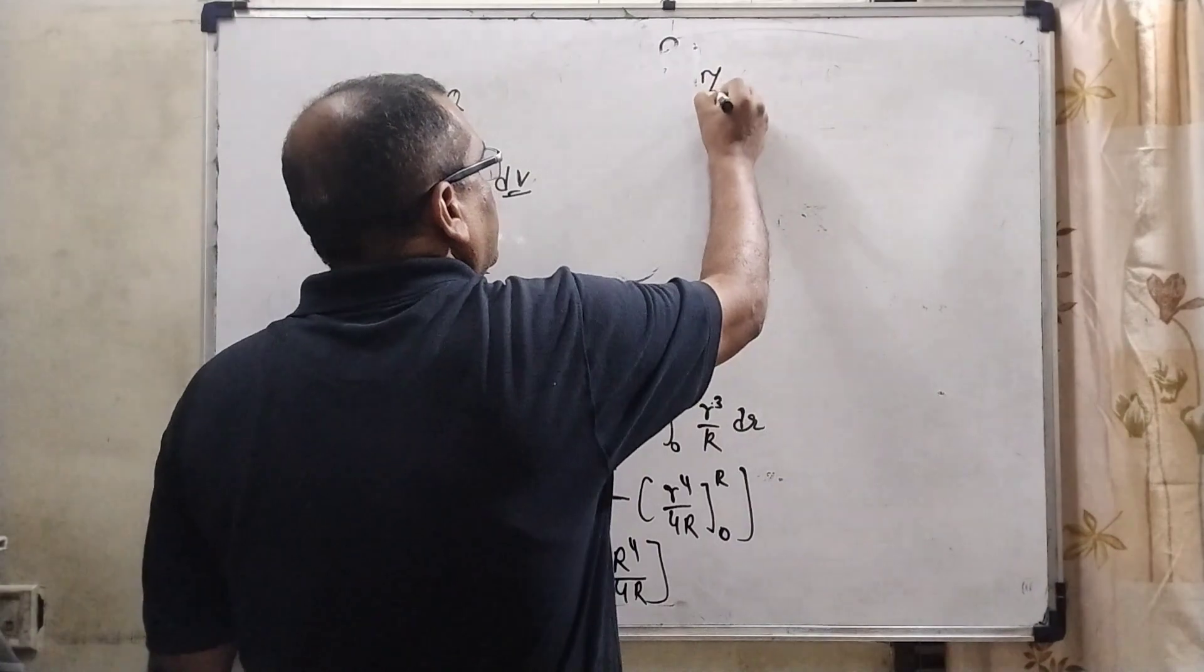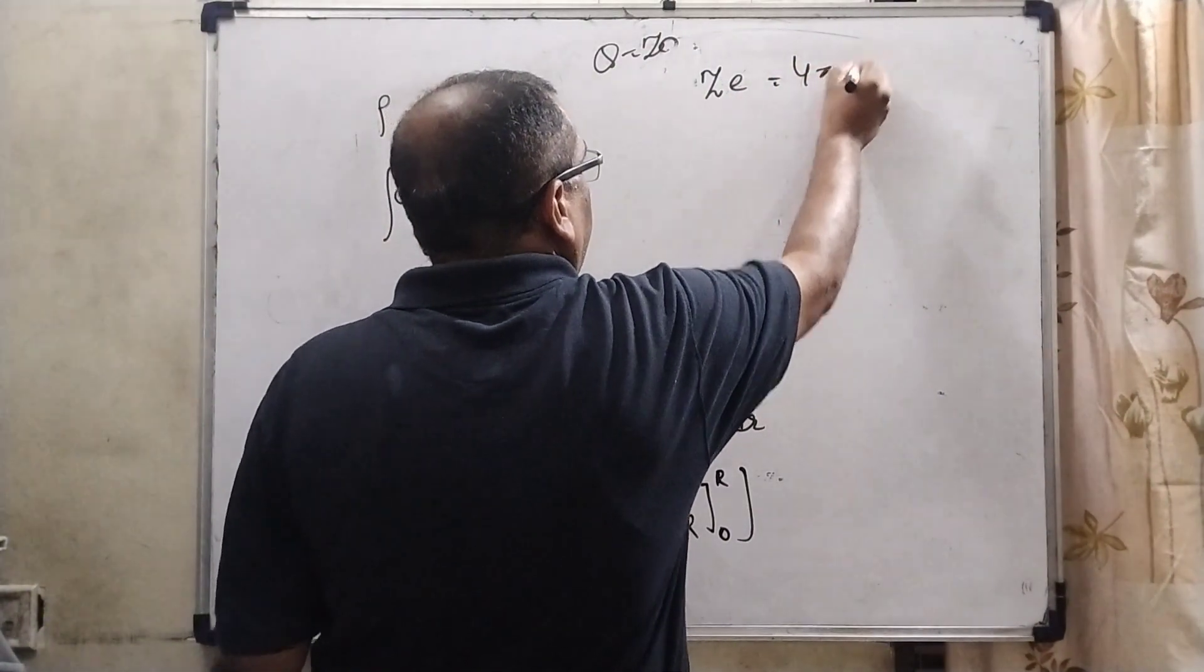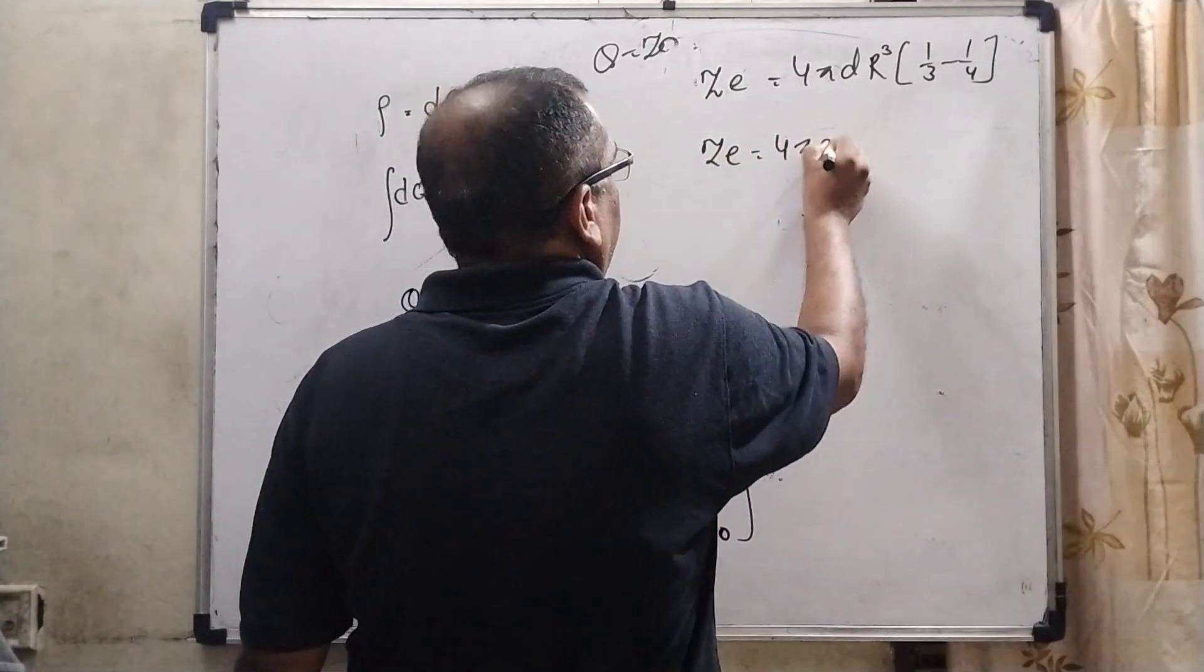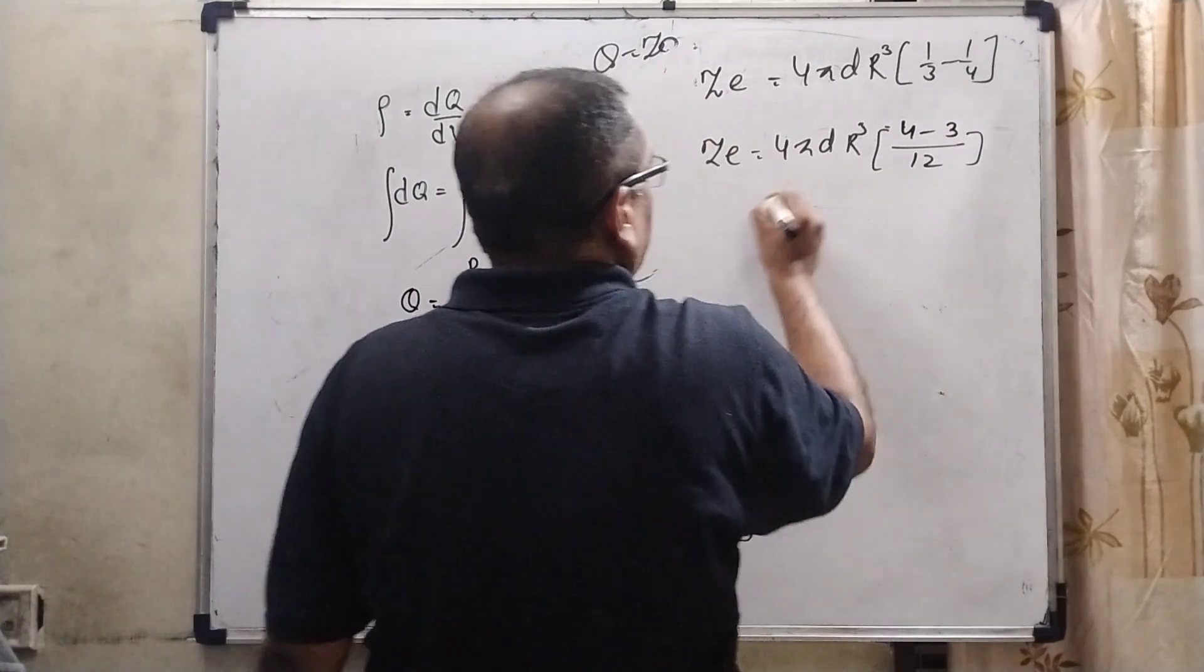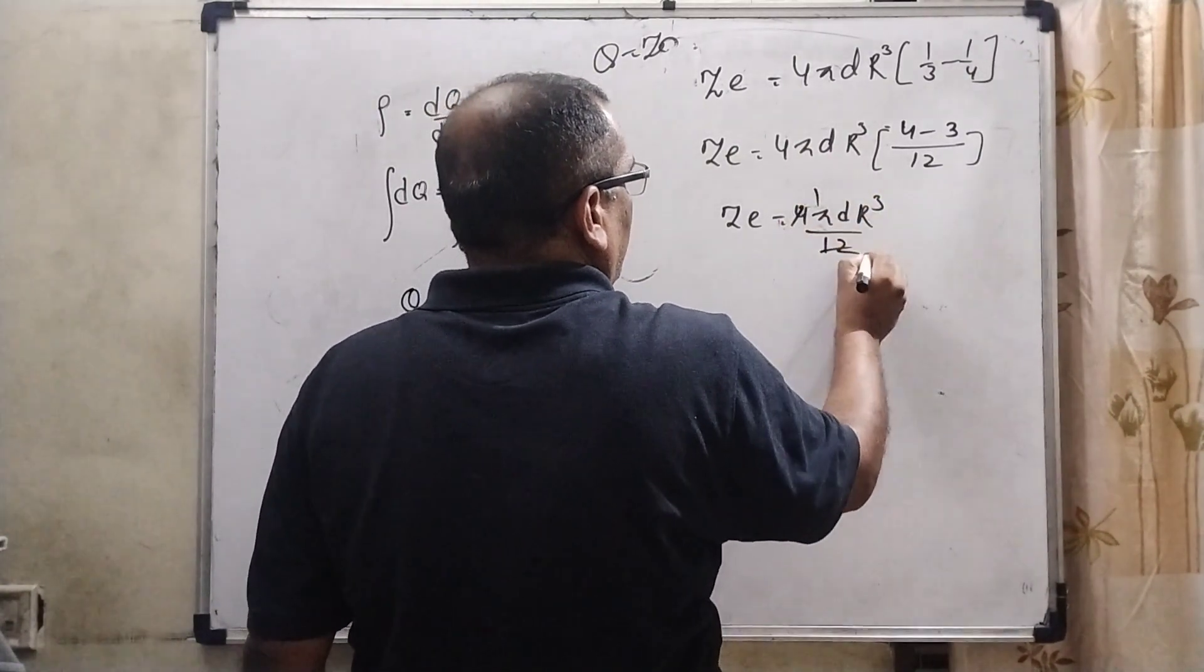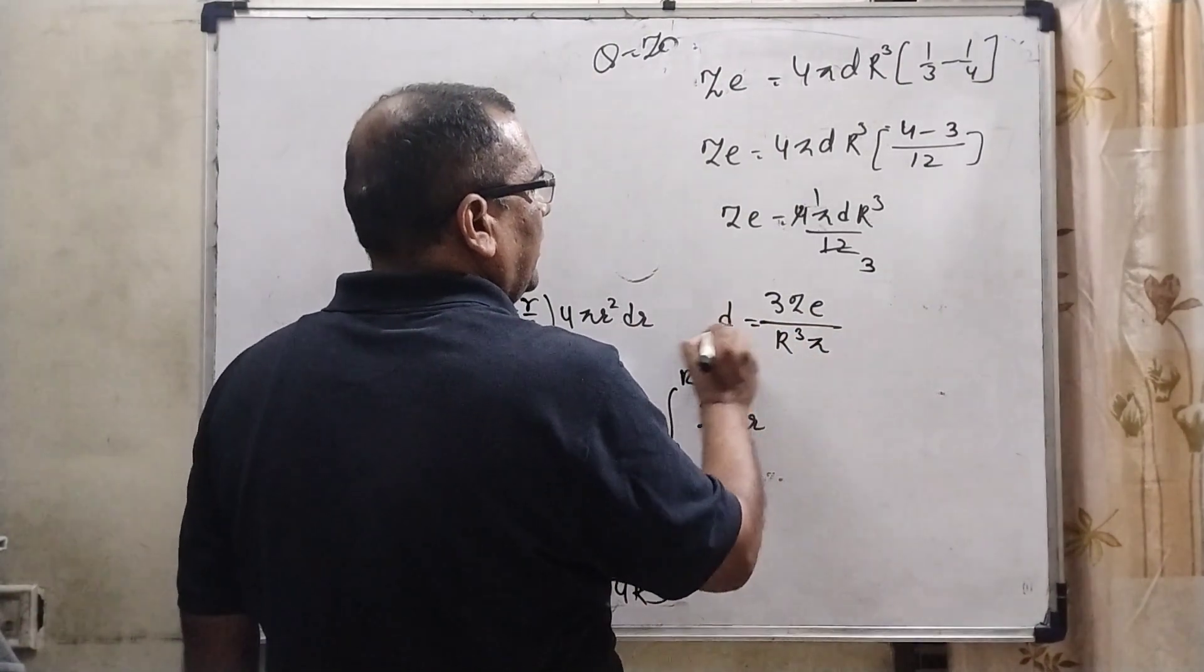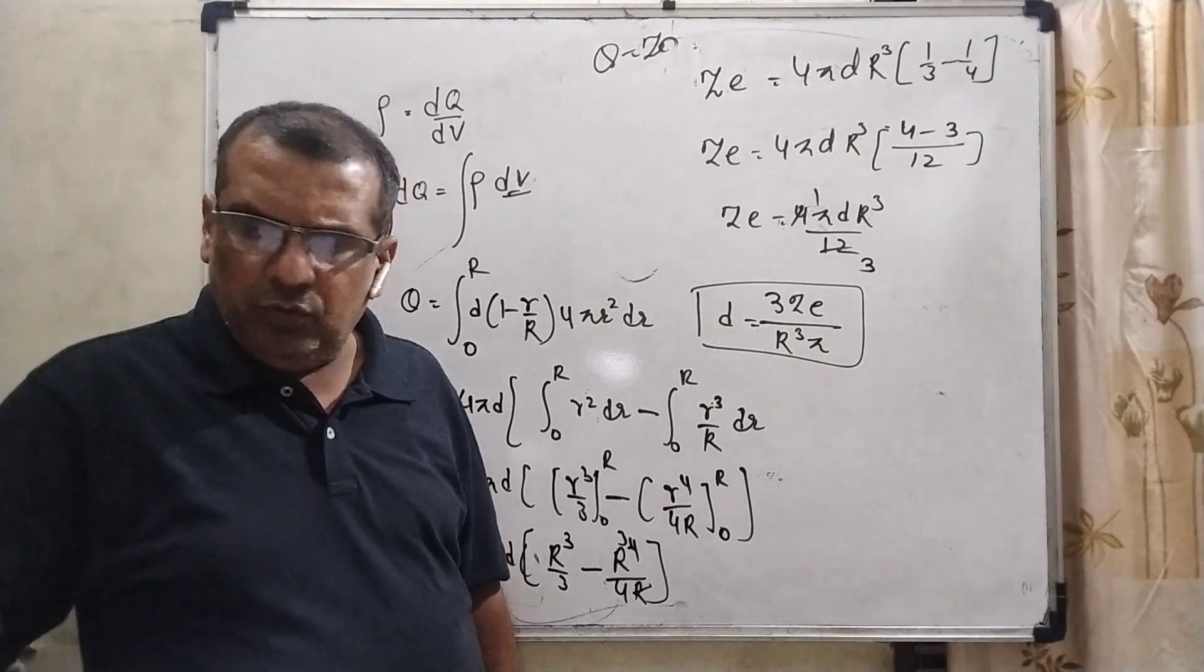So here Q, in the place of Q we are already given that Z into E. Now substitute the limit. In the place of Q we have substitute ZE, total charge, 4πD, here 1 by 2 cancel out R³, so R³ taken common, 1 by 3 minus 1 by 4. So here ZE 4πD R³ and upon 12. 4 1s are 4, 4 3s are 12. We have to find out the value of D, so D equal to 3ZE upon πR³. This is the value of D. Option B is correct, 3ZE upon πR³.